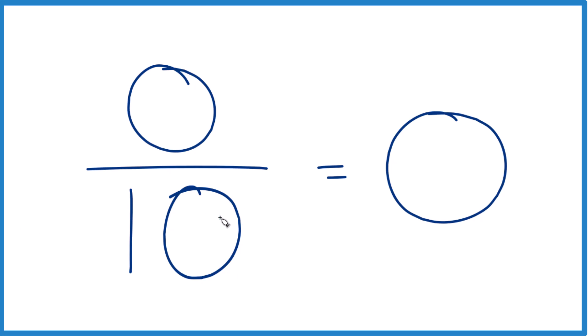Think of it this way. Say you had no money, and you divided that evenly among your 10 friends. How much money did they gain? They didn't get anything, right? Zero.